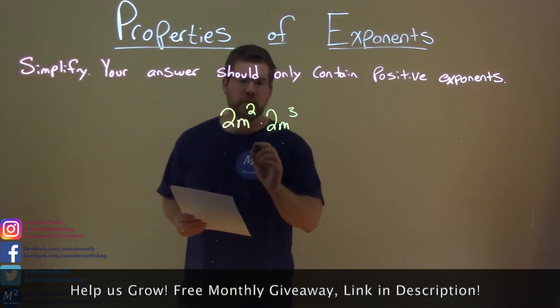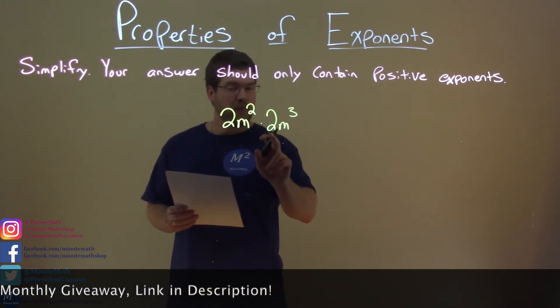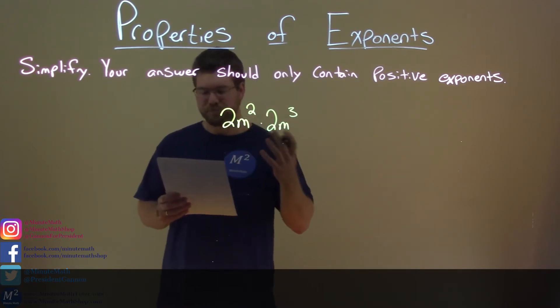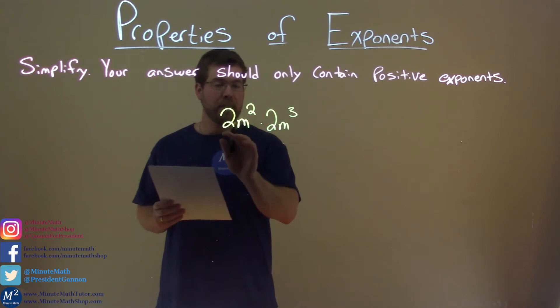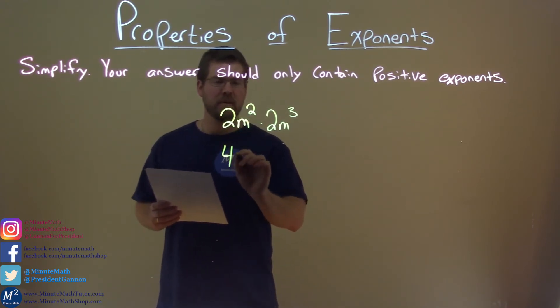First thing I want to do here is I look at the twos. They're both the numbers out front of each of the variables, and so we can multiply them together. We're kind of combining our like terms. So, we're going to combine these two twos together, 2 times 2 is 4.